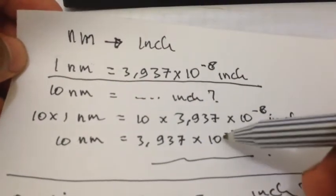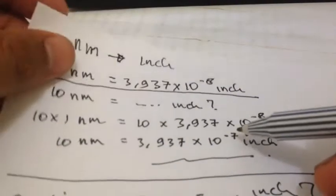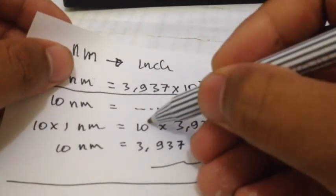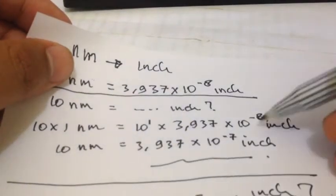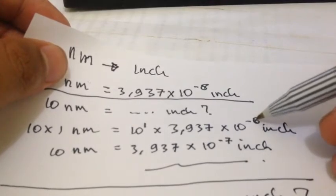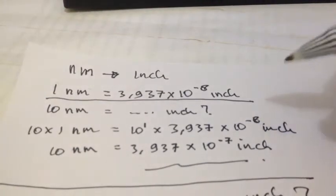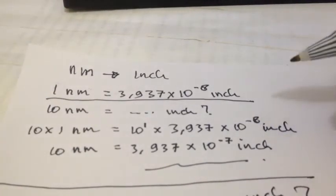How do we get 10 power minus 7? Actually, we have 10 power 1 here, and we multiply it with 10 power minus 8, because we multiply it with minus 8.